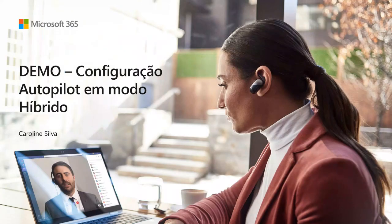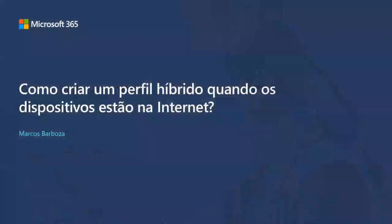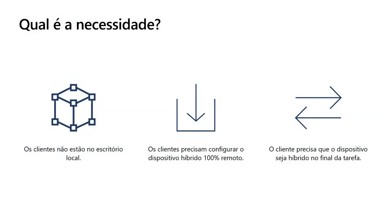Esses são os componentes de configuração quando o dispositivo está sendo criado no ambiente on-premises, na rede local. Agora, quando precisamos que esse processo aconteça fora da rede local — ou seja, quando esses dispositivos estão na internet — o Marcos vai mostrar os próximos componentes. Como a Carol já bem explicou, lidar com dispositivos que estão na internet: como fazer o Autopilot para um join híbrido para um dispositivo que está fora da rede corporativa.